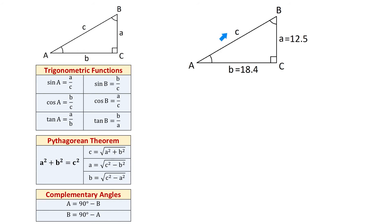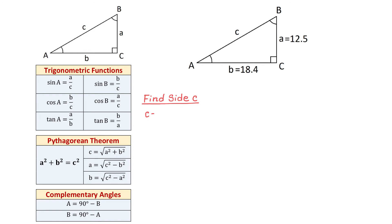We also need to understand that this is not the only way to start this problem. For example, instead of finding the hypotenuse C, we can find angle A or angle B using the tangent functions, since we are given sides A and B. I will start by finding the hypotenuse first. Replacing A with 12.5 and B with 18.4, we use a calculator and get that C is approximately 22.2 units.